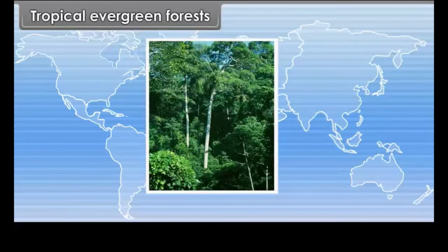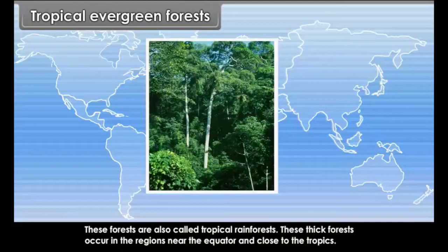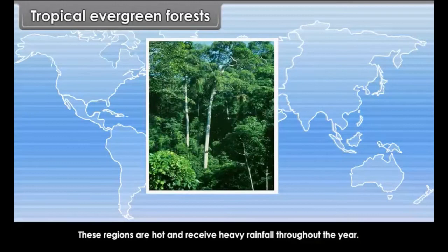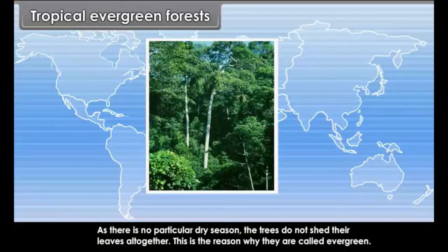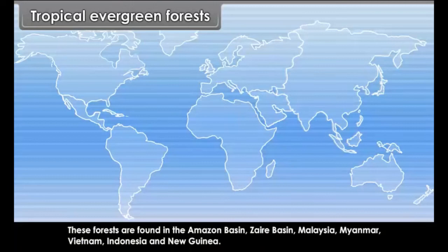Tropical evergreen forests, also called tropical rainforests, occur in regions near the equator and close to the tropics. These regions are hot and receive heavy rainfall throughout the year. As there is no particular dry season, the trees do not shed their leaves altogether — this is why they are called evergreen. These forests are found in the Amazon basin, Zaire basin, Malaysia, Myanmar, Vietnam, Indonesia and New Guinea.